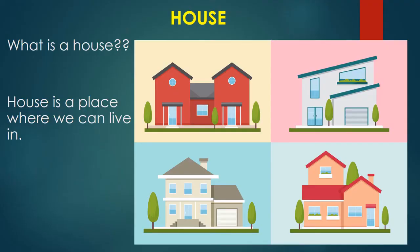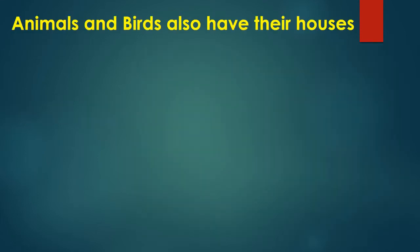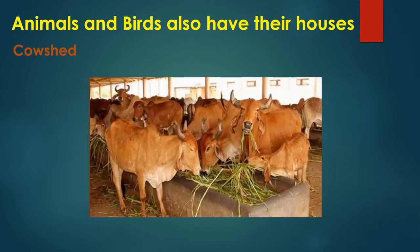What is a house? A house is basically a home — it is a place where we can live in. Now do you know, kids, animals and birds also have their houses. Let us see what their houses are called. The first animal is cow. The cow's house is called a cow shed, where the cow eats its food and takes rest.